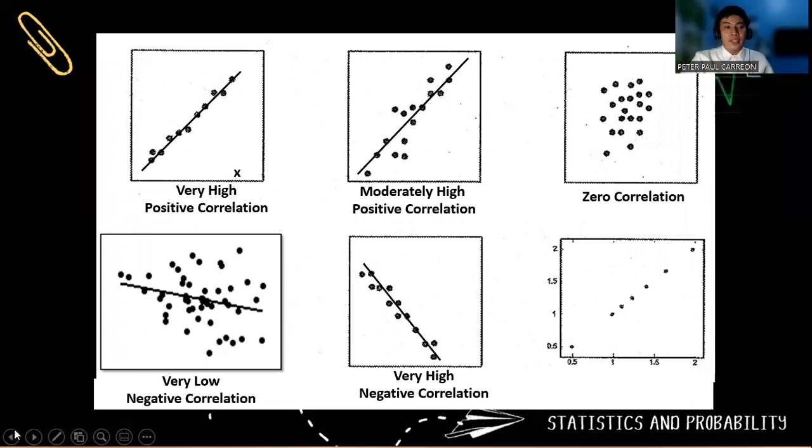And notice this one. This is what we call a perfect positive correlation. So when you want to draw a perfect negative correlation, then all the points must lie on this trend line. Okay, this trend line.